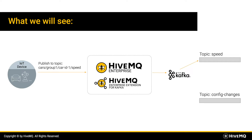Here's what we will see. We have MQTT devices that are publishing data with the topic cars/group1, their specific ID, and speed to HiveMQ. The messages are then forwarded via the Enterprise Extension for Kafka to our Kafka to the topic speed.